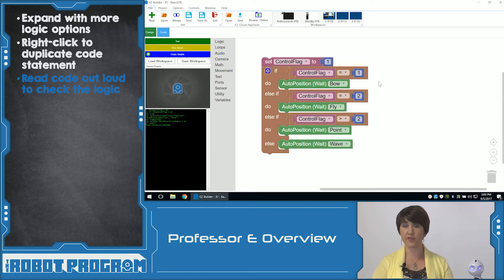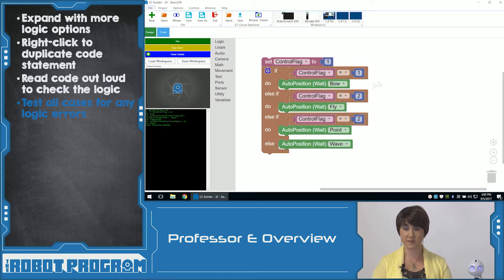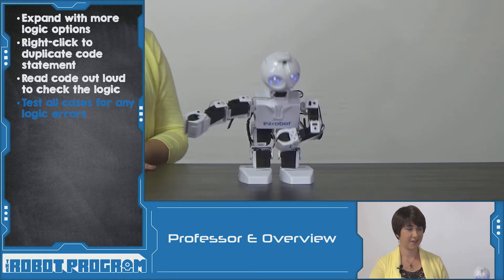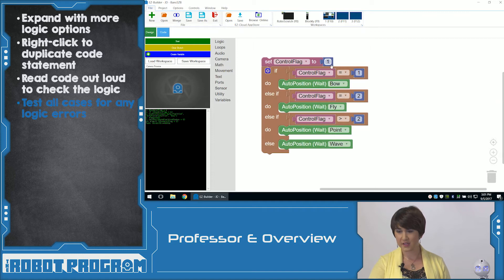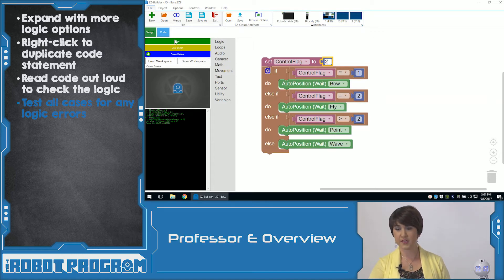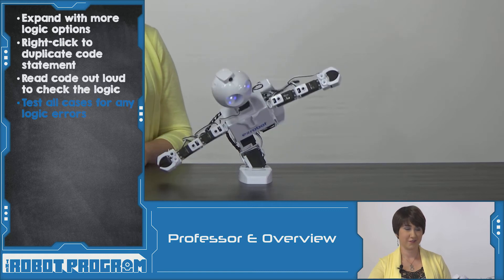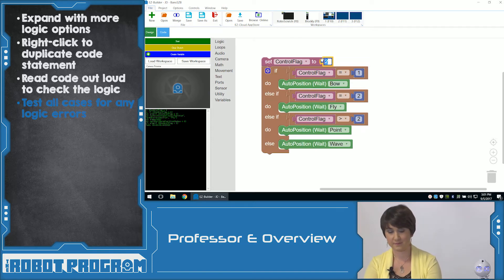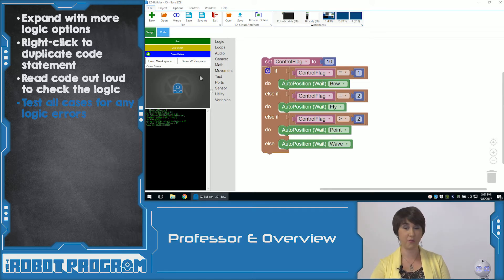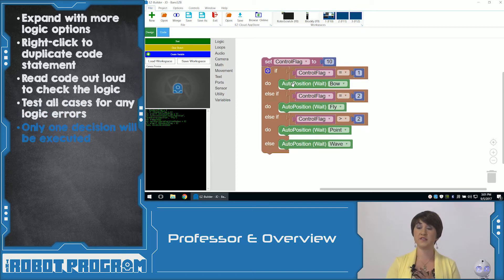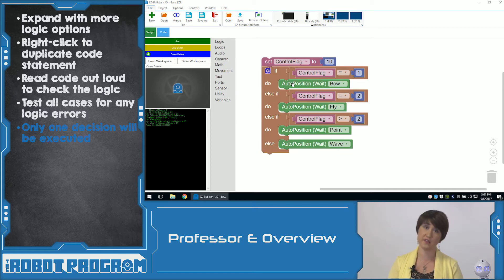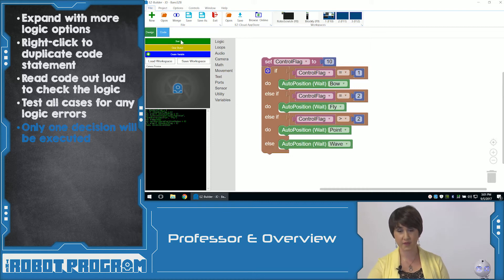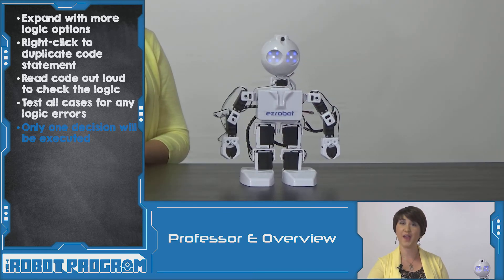We're going to try that out. I've set ControlFlag to one — let's execute and make sure he does the bow. Start. ControlFlag is equal to one, he bows. If ControlFlag is equal to two, he should fly. Now let's set ControlFlag to ten — it's not equal to one, so he won't bow. It's not equal to two, so he won't fly. It is greater than two, so he should point. Remember that we can only execute one of these statements — only one of them can be true. If more than one is true, it's going to execute the first thing it gets to, so you have to watch for that. Start. He pointed. Excellent.